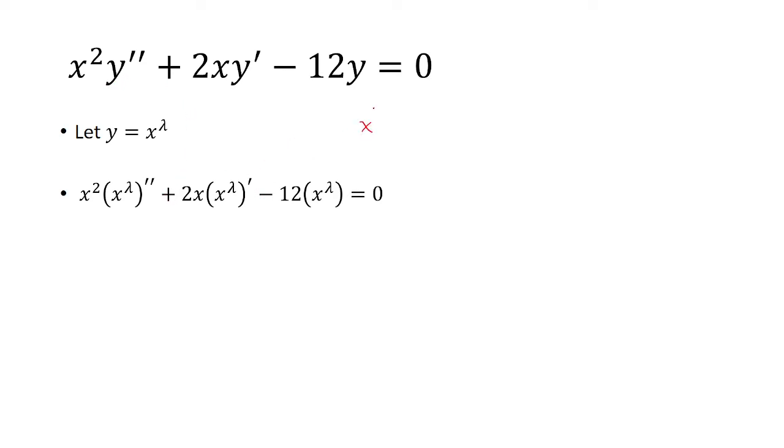So we have to take the derivative of x to lambda using the power rule, bring down the exponent, subtract 1. Now in order to take the derivative of the first derivative, we still need to use the power rule by bringing down the exponent, subtracting 1.